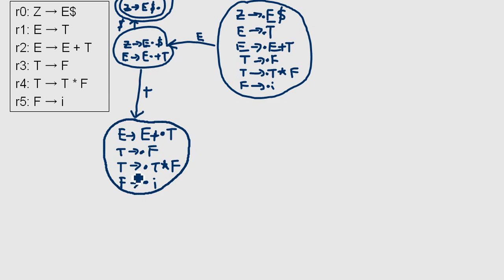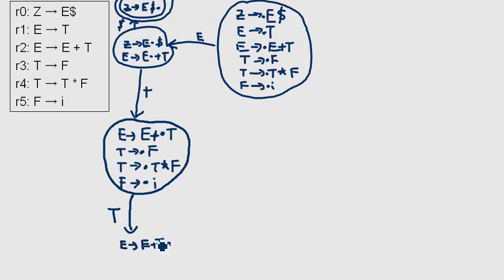Always make sure to check if the pointer is in front of a variable. Next, let's say the next input is T. The pointer goes to the end, but we have to take care because there's another T rule here, so that rule also has to be applied.